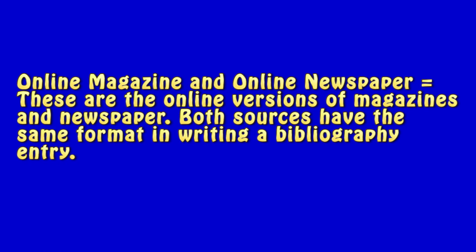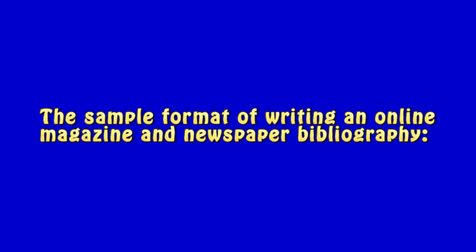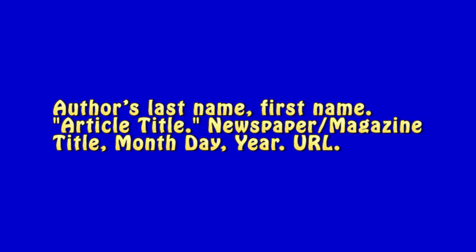Next are online magazine and online newspaper. These are the online versions of magazines and newspapers. Both sources use the same bibliography format. The format is: author's last name followed by first name, then the article title in quotation marks, followed by the newspaper or magazine title, then month, day, and year of publication, and finally the URL.